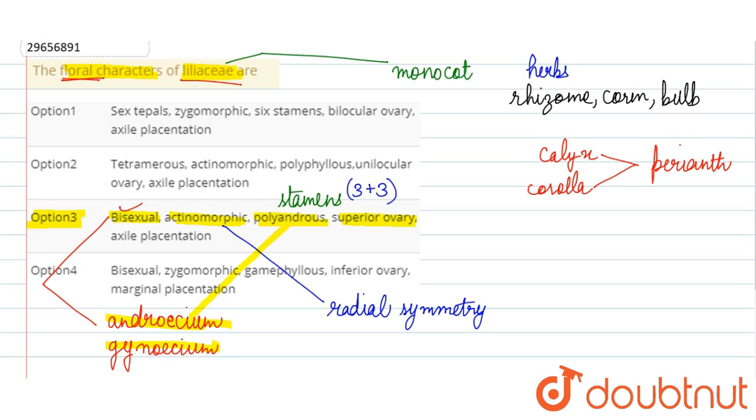Ovary is superior - that is correct. And placentation is axile. This refers to how the ovules are arranged in the flower. In the Liliaceae family, we see axile type of placentation, which means the placenta is on the axis. In a trilocular ovary, within three chambers of the ovary, axile placentation has several ovules arranged.